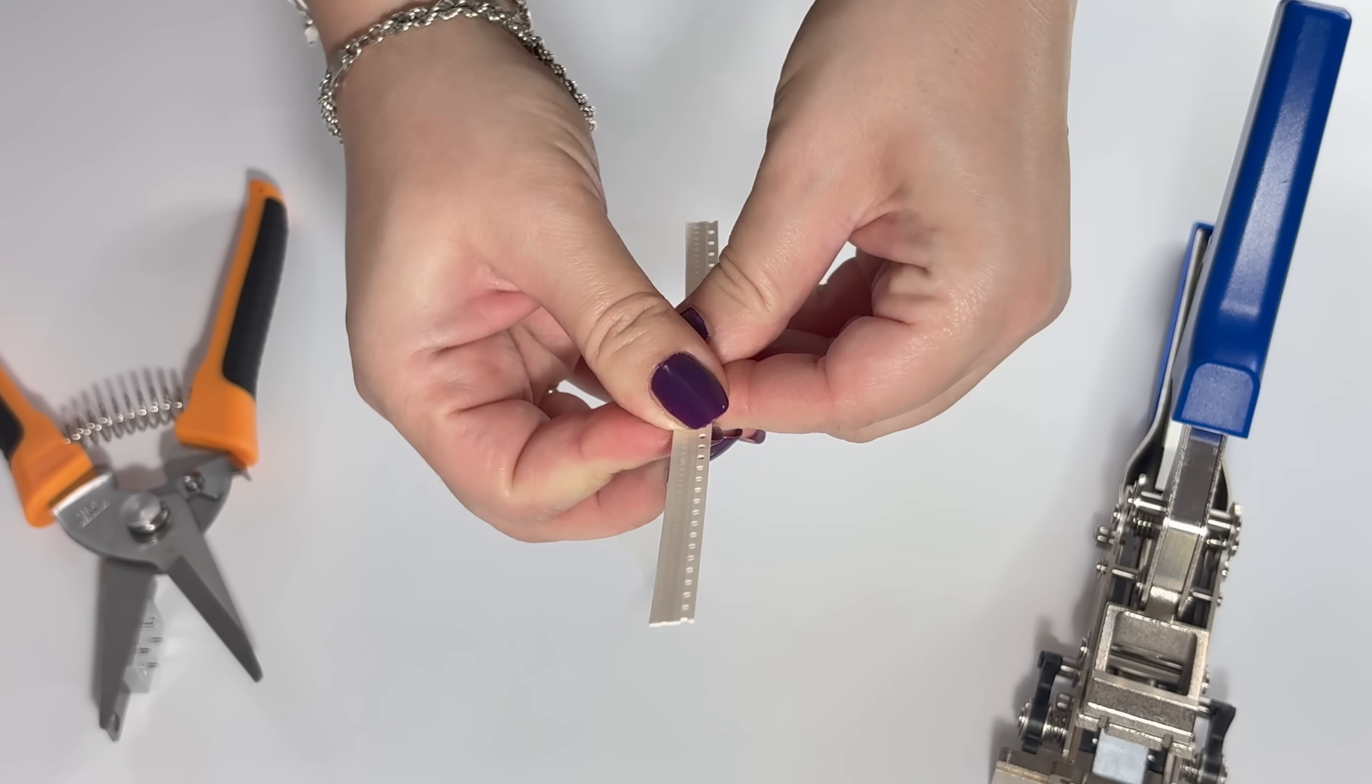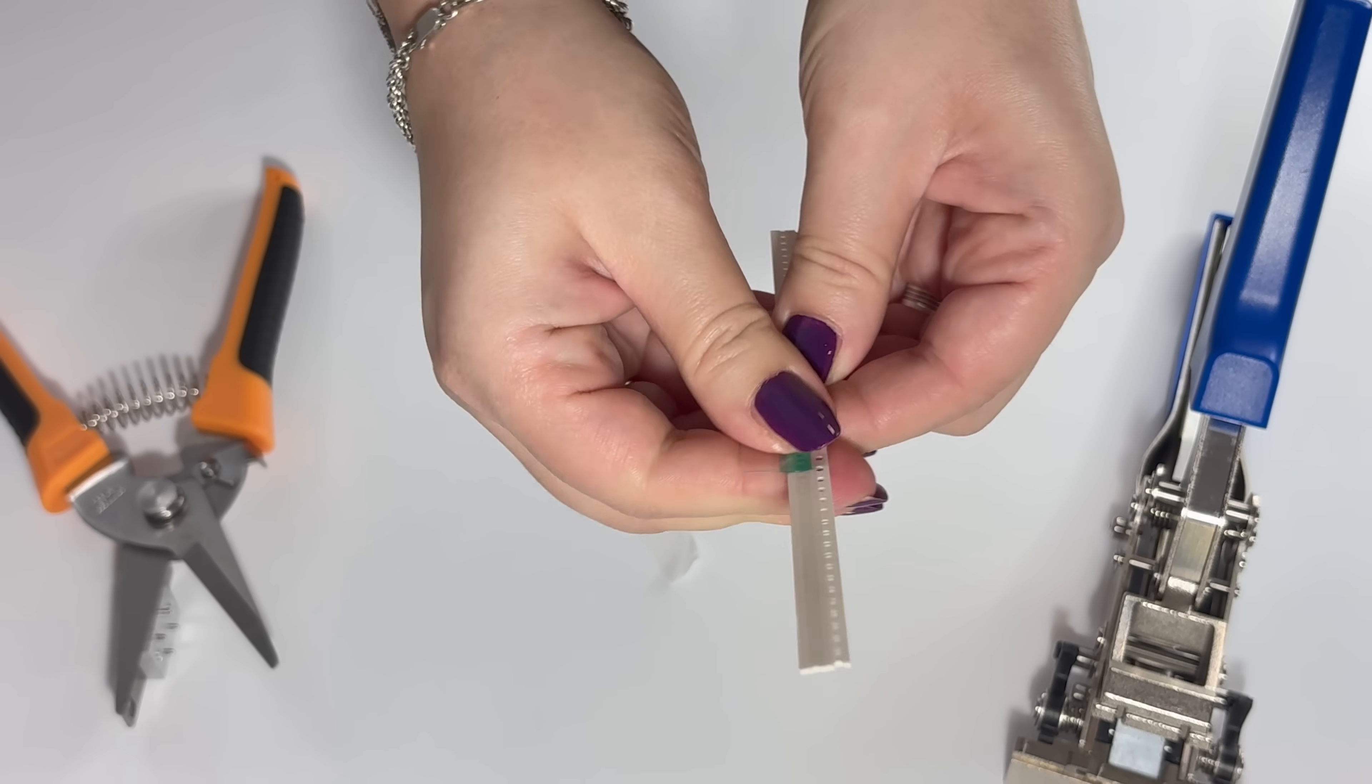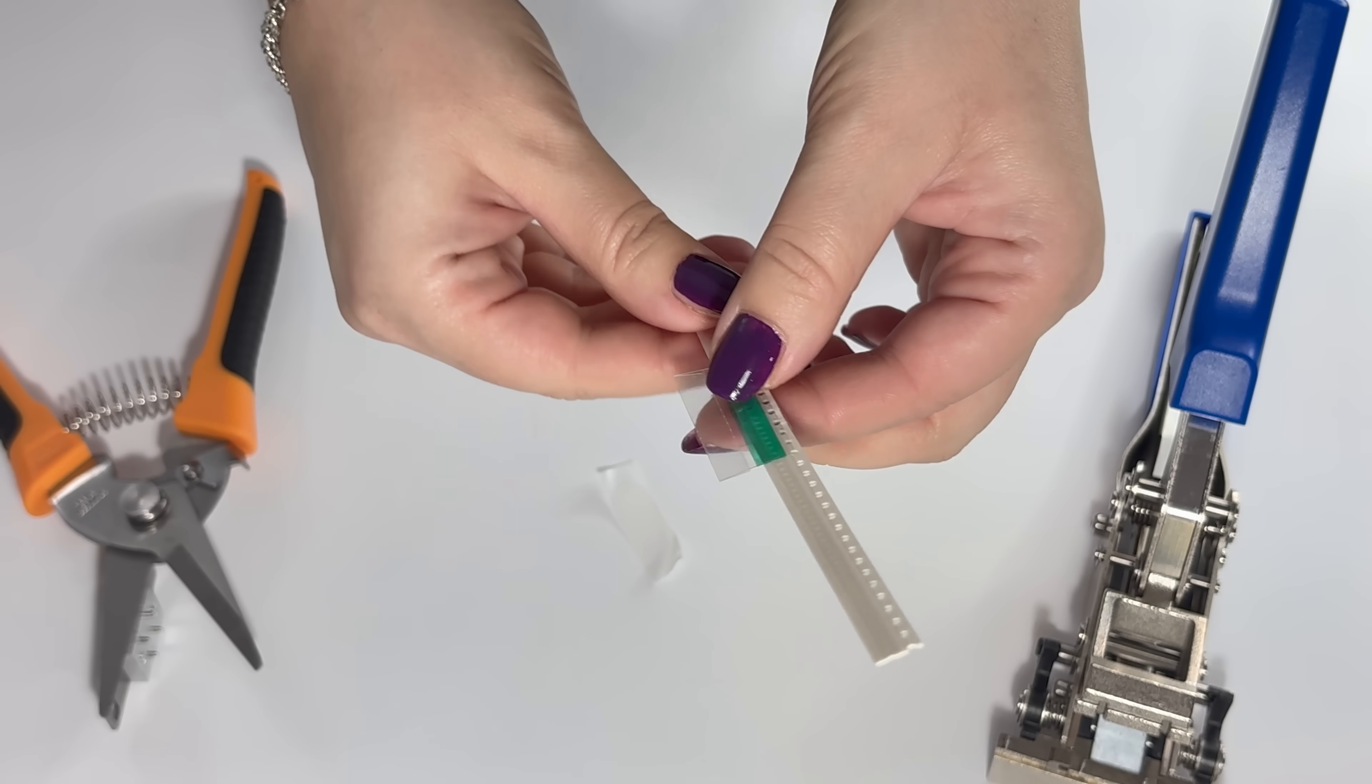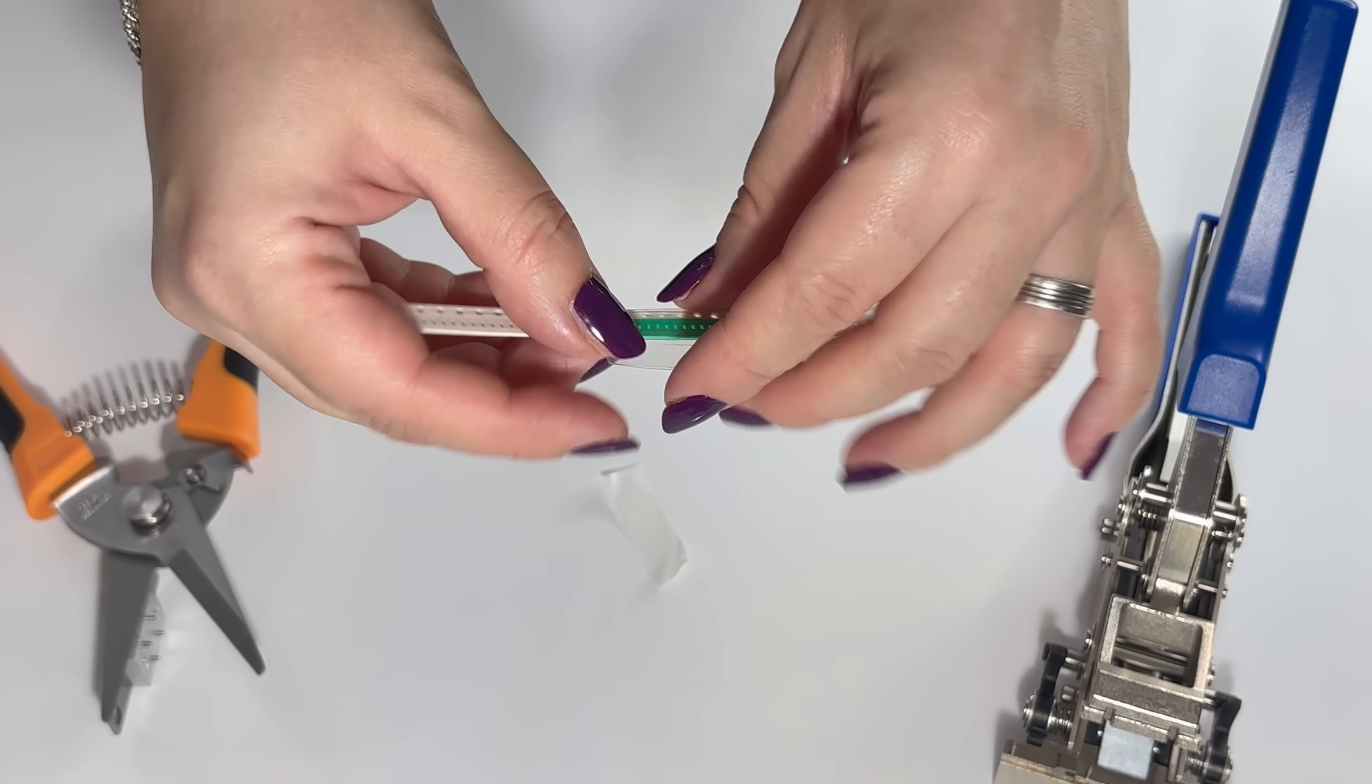Fold it over. Firmly press it there. Once you do that you can remove the protective tape.